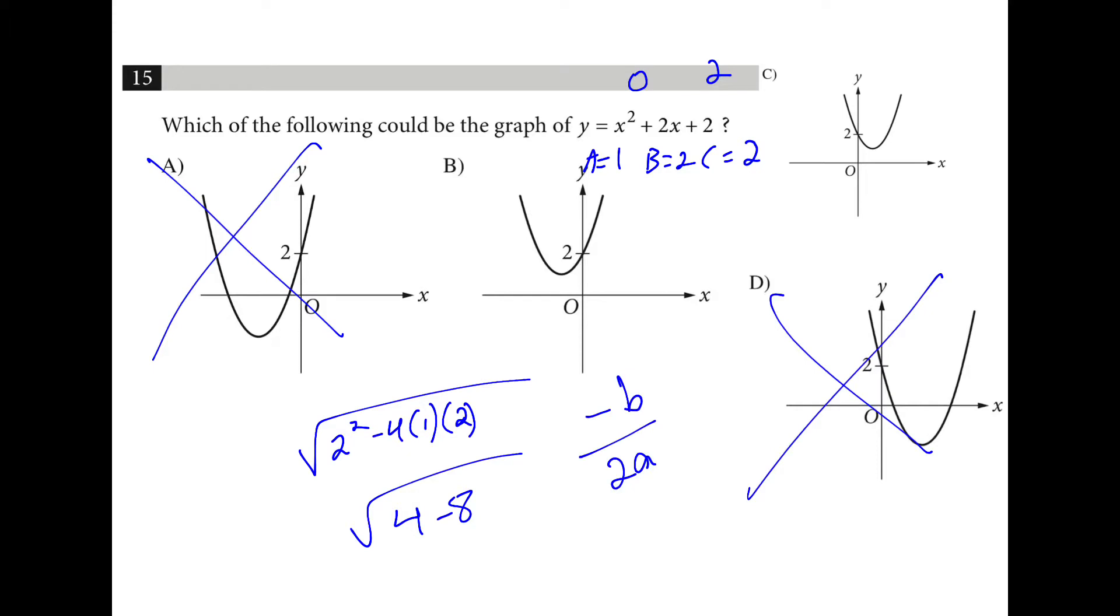That leaves the vertex, negative b over 2a. So that's going to be negative 2 over 2, which is negative 1. So b is going to be the right answer.